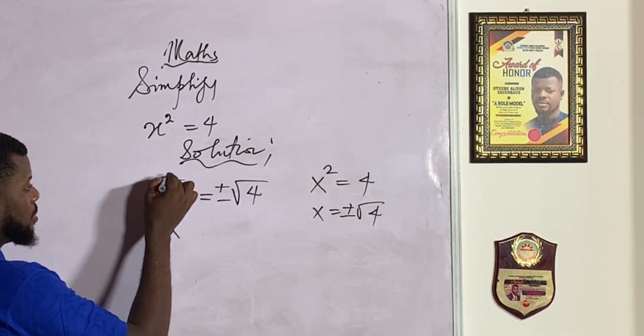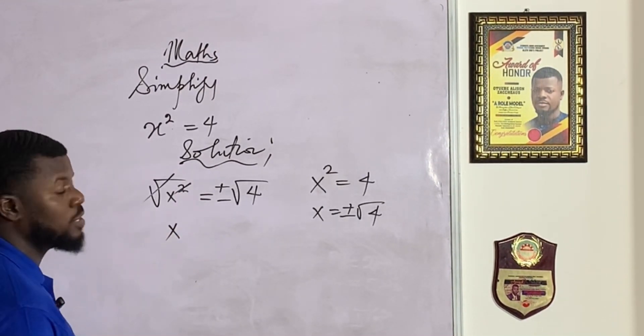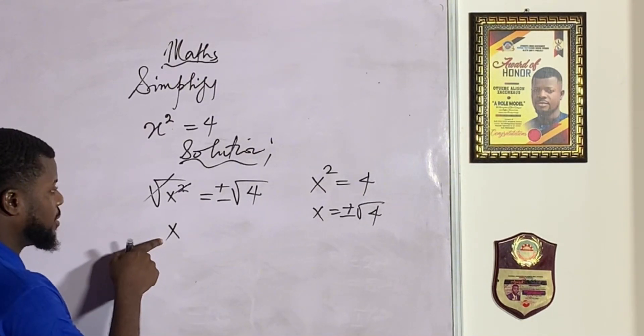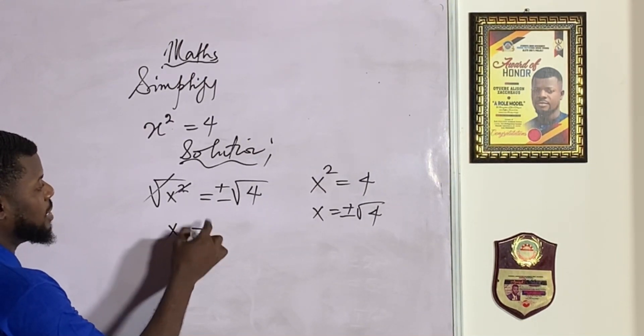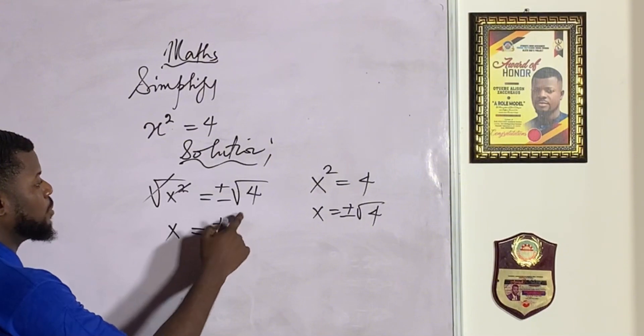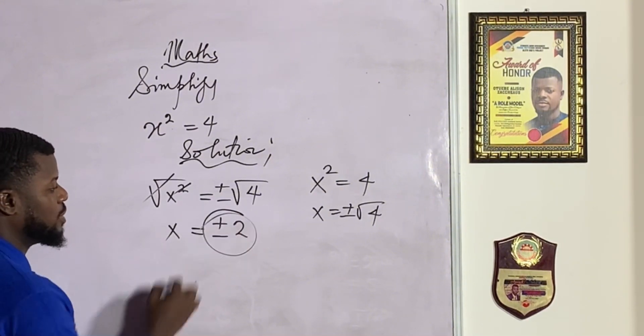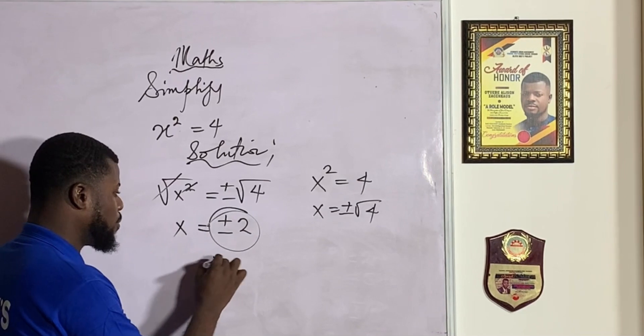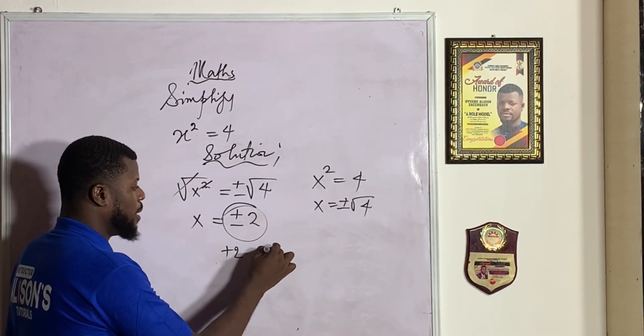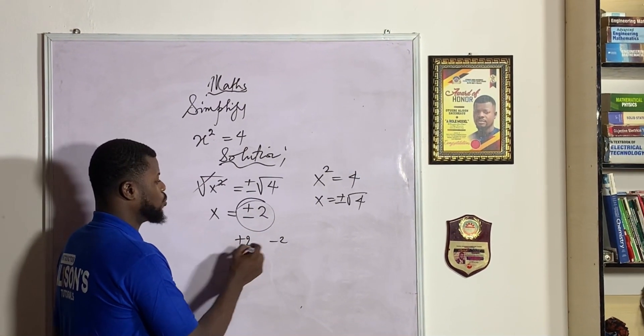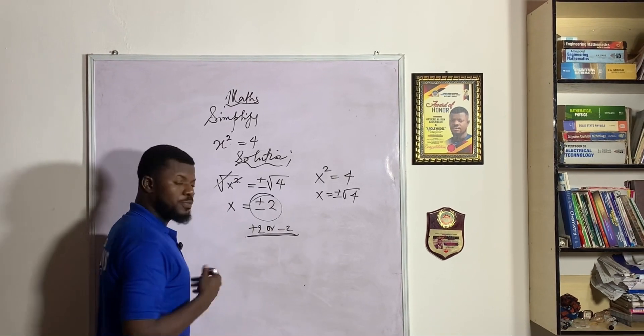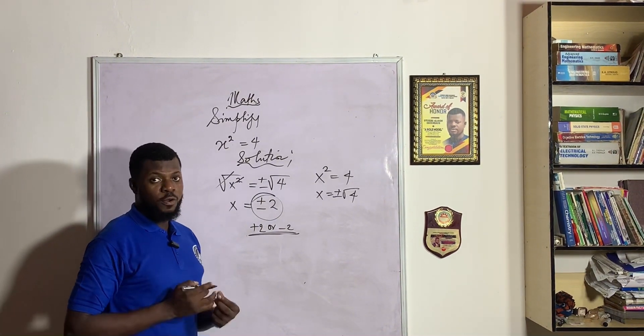By the time this x squared cancels out with this square root, x will be left here. So this right-hand side will be having plus or minus the square root of 4 is 2. So this is the official answer to this problem. The answer is not plus 2. It is not also minus 2, but it is either plus 2 or minus 2. Those are the possible values of x.